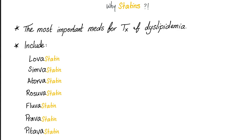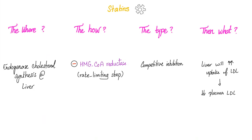Statins are the number one drug of choice for dyslipidemia. Examples: lovastatin, simvastatin, atorvastatin, rosuvastatin, fluvastatin, pravastatin, and pitavastatin. Summary — the where: they decrease endogenous cholesterol synthesis in the liver. The how: by inhibiting HMG-CoA reductase, the rate-limiting step in de novo cholesterol synthesis. The type: competitive inhibition. Then what: the liver increases LDL uptake by upregulating LDL receptor expression, reducing plasma LDL.